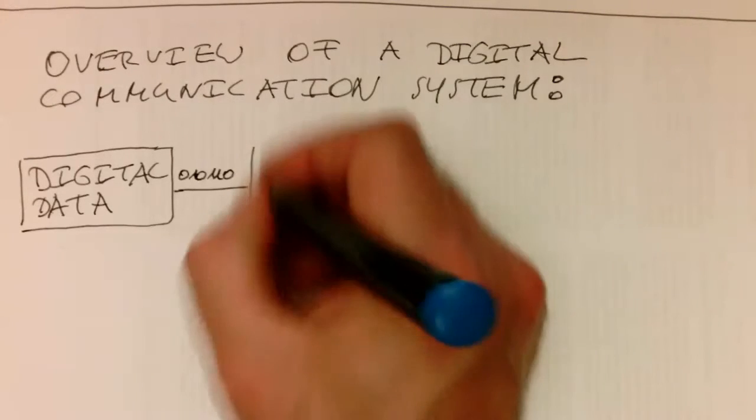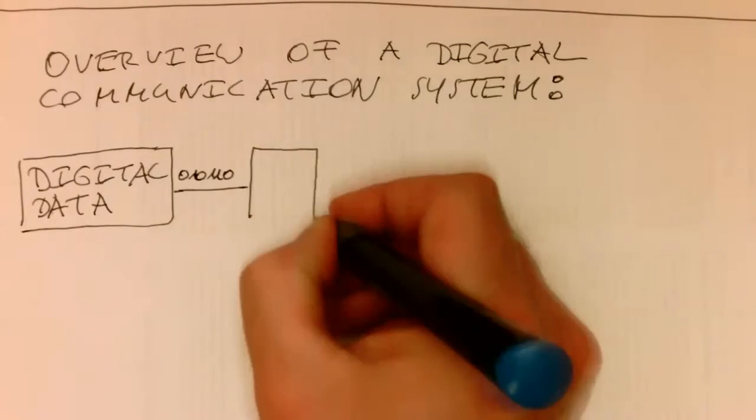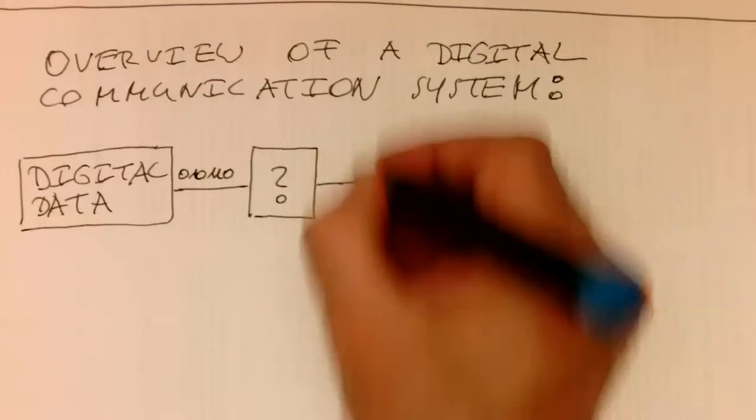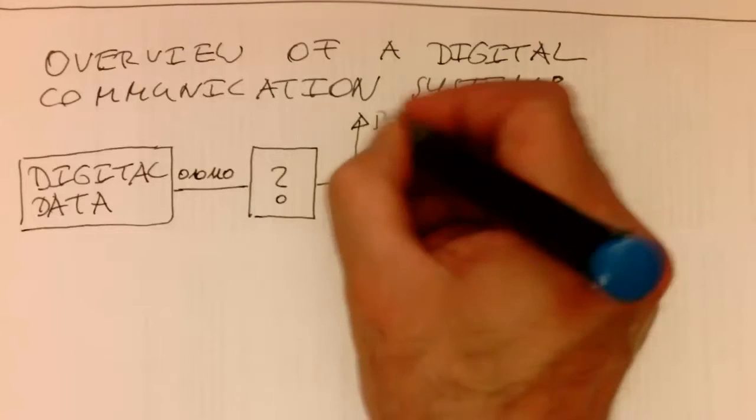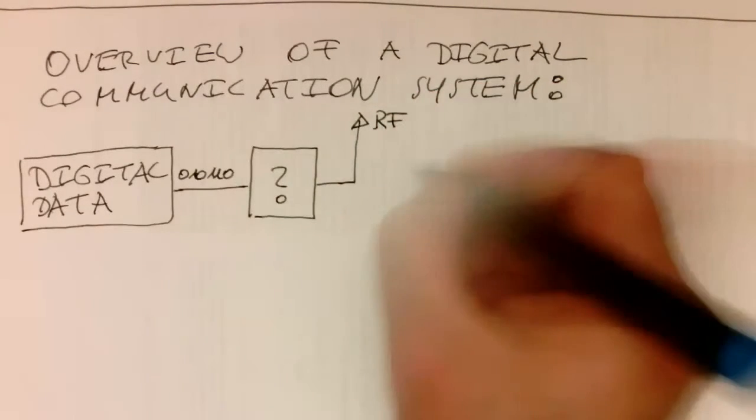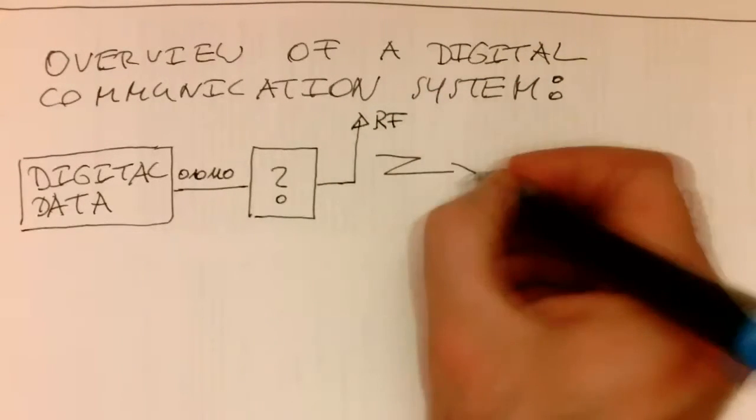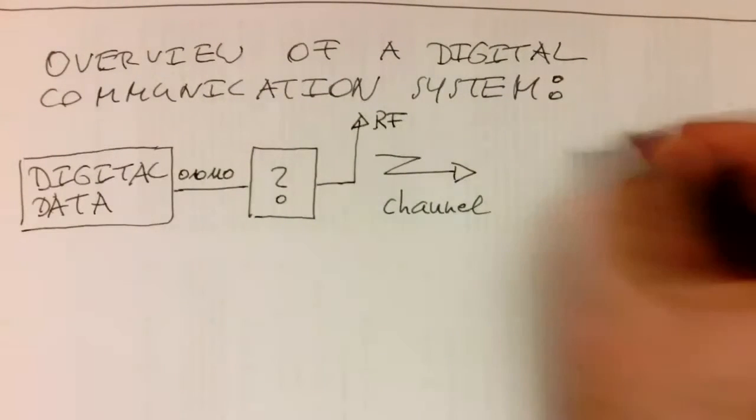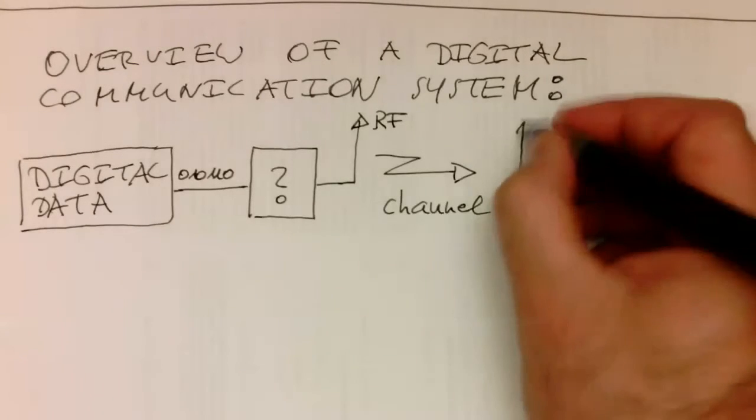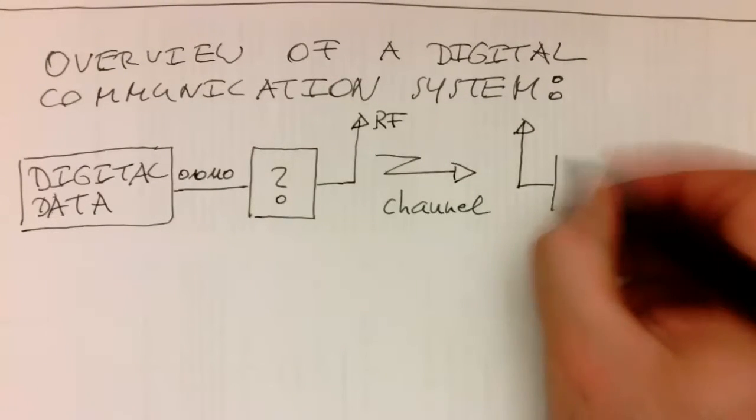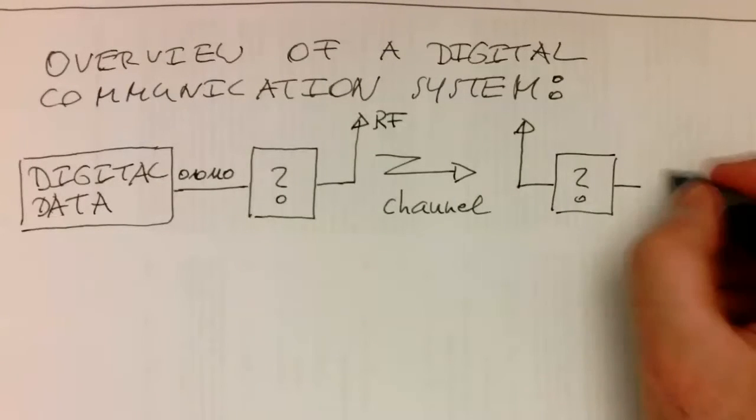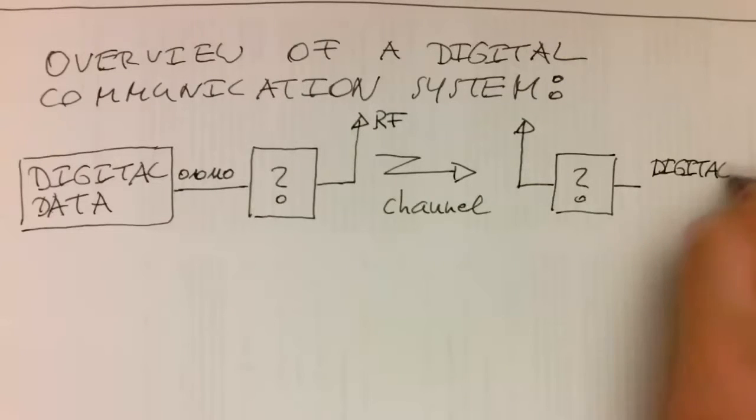And then we've got here some kind of magic box, and I just draw a question mark in there, which turns this into some kind of radio frequency energy. And then this is transmitted via a channel to another antenna here. And then here we've got again this box, and then this turns it again into digital data.